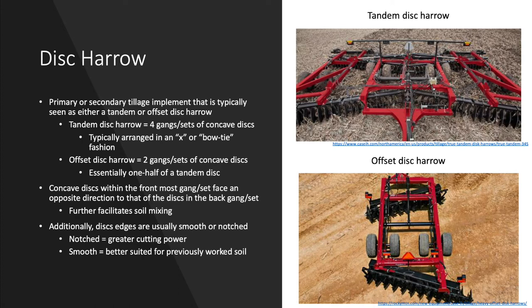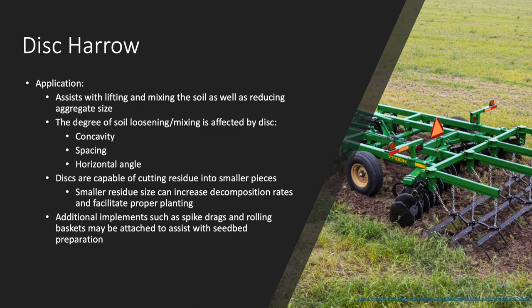Disc edges are usually either smooth or notched. The notched discs are better able to cut through residue in firm soil while the smooth discs are better suited for previously worked soil. Disc harrows can operate at varied soil depths and assist with lifting and mixing the soil as well as reducing aggregate size. The degree of soil loosening and mixing is affected by the disc's concavity, spacing, and horizontal angle. Increasing disc concavity increases the width of soil that the disc is capable of mixing and lifting. Reducing the space between each individual disc will also increase the degree of mixing and create more fine-textured soil. Increasing the horizontal angle of the gangs of discs will also increase the degree of loosening and mixing as more soil will make contact with the discs and be displaced. The discs are also capable of cutting residue into smaller pieces, which increases the rate of decomposition and helps to facilitate proper planting.